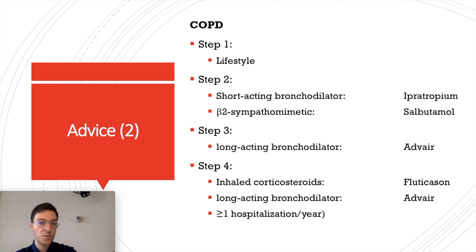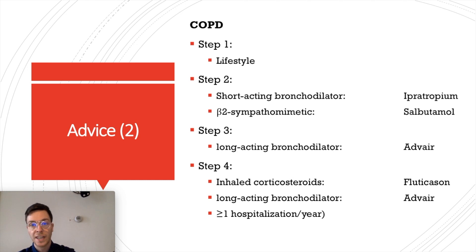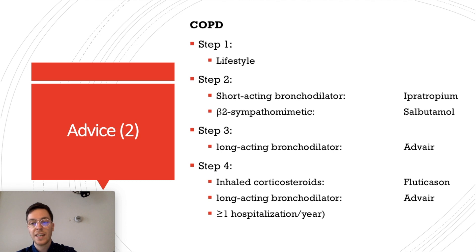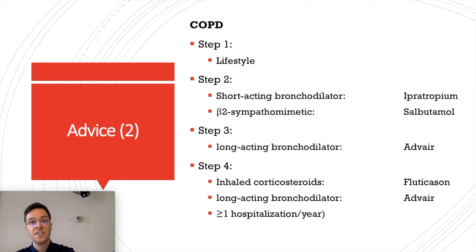For COPD treatment, there are four steps. First, lifestyle interventions. The second step is short-acting bronchodilators like ipratropium, possibly in combination with a beta-2 sympathomimetic like salbutamol. Step 3 is to add a long-acting bronchodilator. Step 4 is inhaled corticosteroids like fluticasone or long-acting bronchodilators like Advair, and this is only suitable for patients who need more than one hospitalization a year due to severe symptoms.